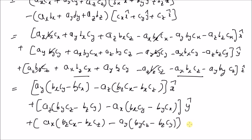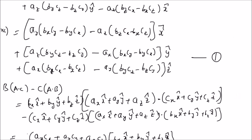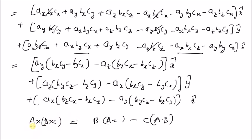If you examine this result — the final output of the right hand side, that is B times (A dot C) minus C times (A dot B) — we can clearly see that this result is exactly the same as equation one. Therefore, the cross product A cross (B cross C) is equal to B times (A dot C) minus C times (A dot B). This identity is very useful because instead of calculating two cross products, we can easily calculate these dot products and compute the corresponding vectors. Thanks for watching.